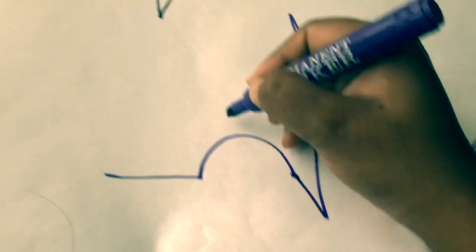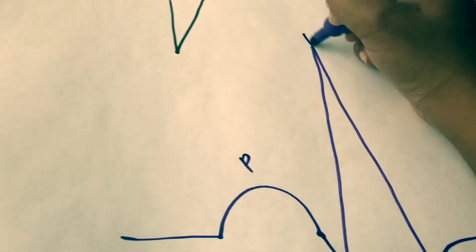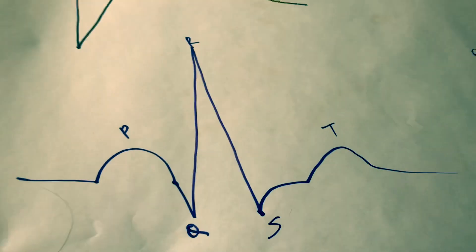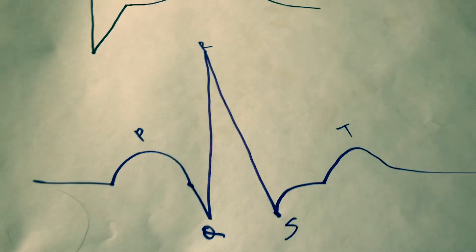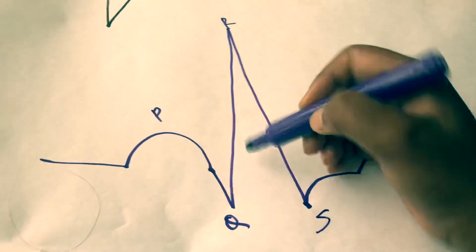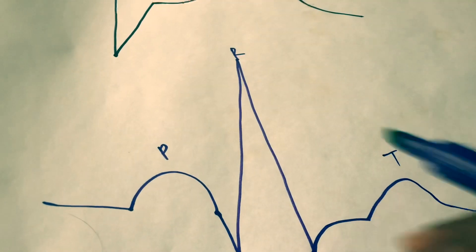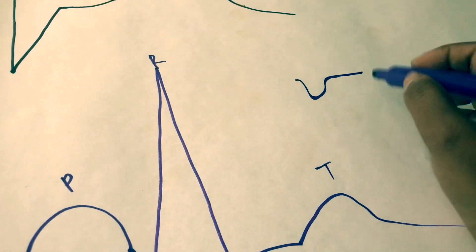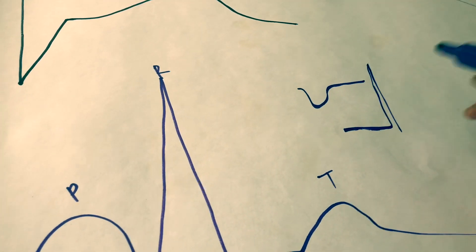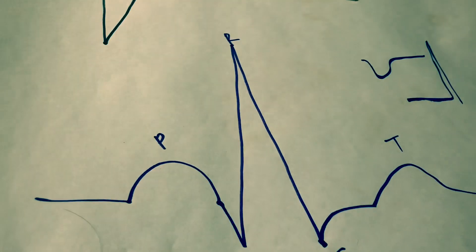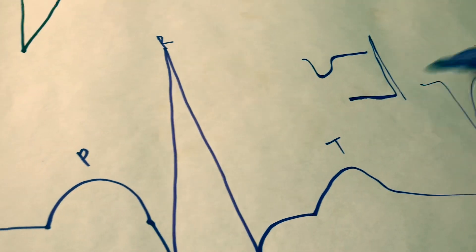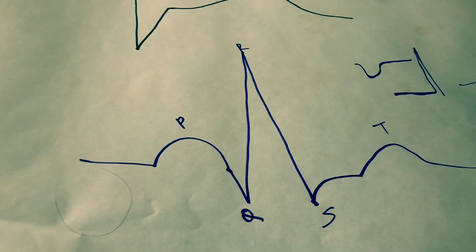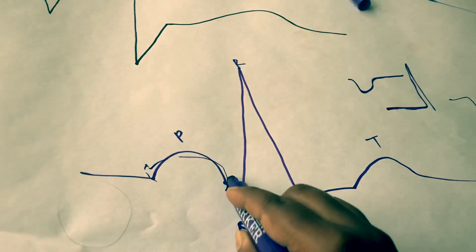We have all the waves: P, Q, R, S, and T. We need to have all the P waves present, and the P waves should all look the same. If there is no P wave or a difference — like a downward deflection — that is abnormal. The P waves should be upright and rounded.